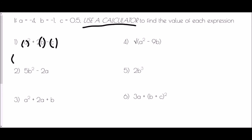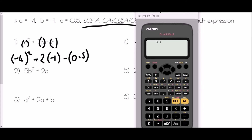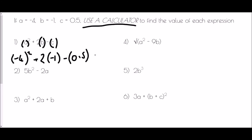Here, a is negative 4, so I pop that inside a bracket and square it, then add 2 times b, which is negative 1, then take away c, which is 0.5. On a scientific calculator, I type: bracket negative 4 close bracket squared, plus 2 bracket negative 1 close bracket, take away bracket 0.5 close bracket. The answer comes out as 27 over 2, which as a decimal is 13.5.